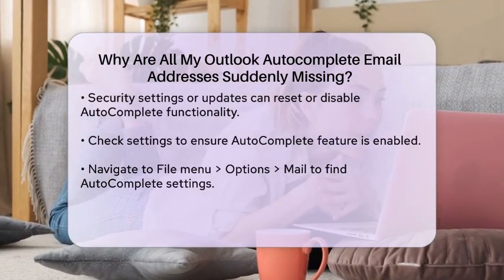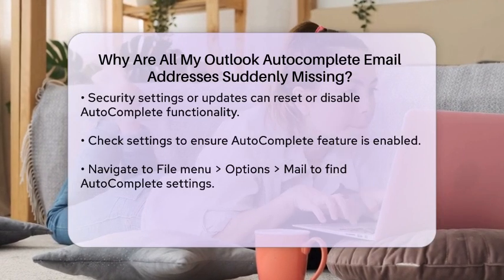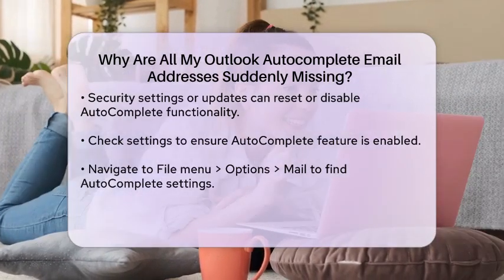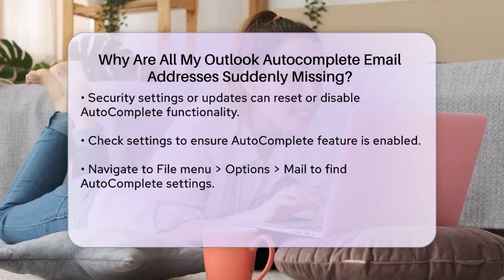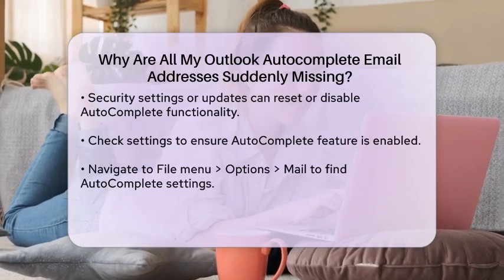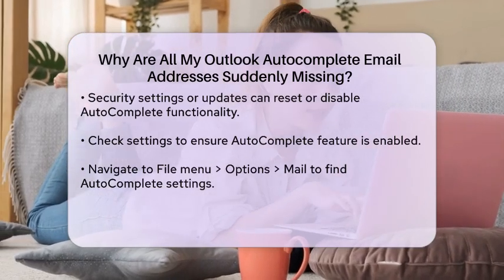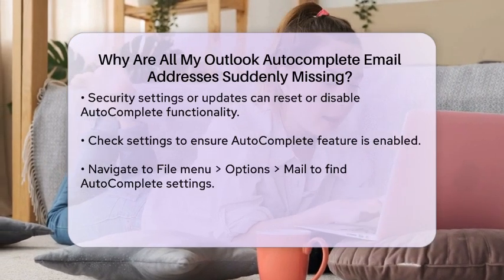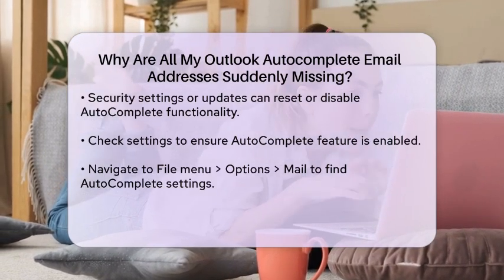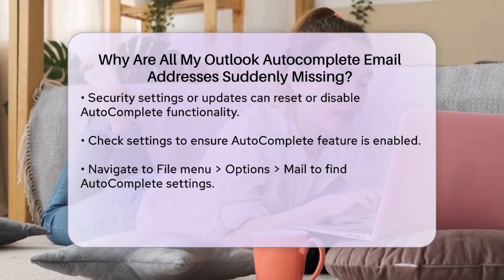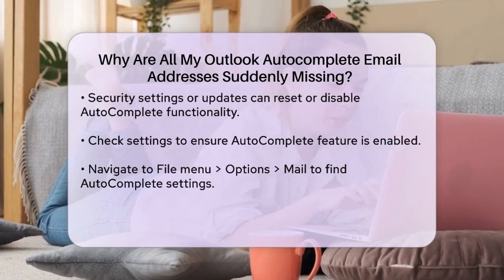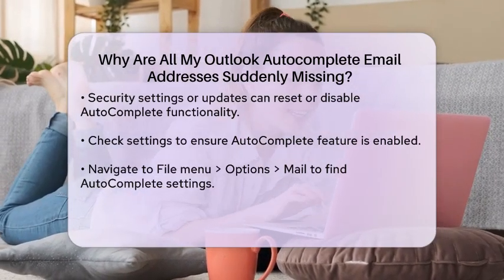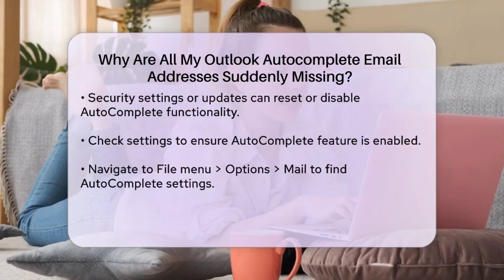If you find that your Autocomplete list is missing, there are steps you can take to restore it. First, check your settings to ensure that the Autocomplete feature is enabled. You can do this by going to the File menu, selecting Options, and then navigating to the Mail section. Look for the option labeled "Use Autocomplete list to suggest names when typing in the To, CC, and BCC lines," and make sure it is checked.